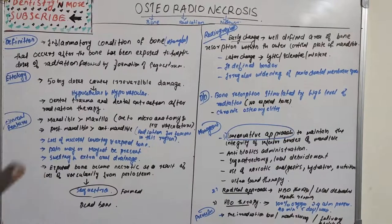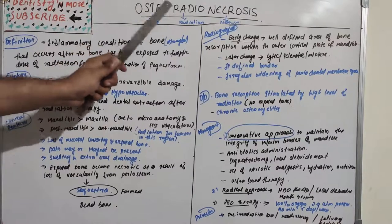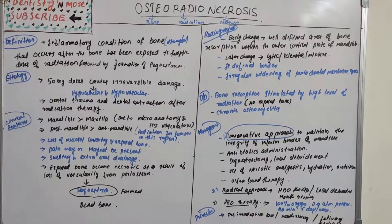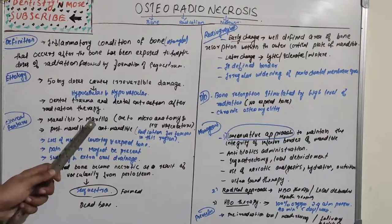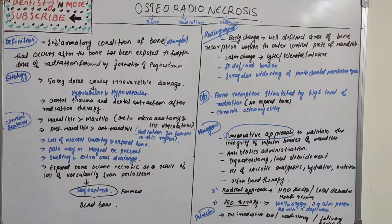On the preventive side, pre-radiation care, mouth rinsing, and salivary substitutes are also options. In summary, osteoradionecrosis is the formation of dead bone due to radiation therapy. However, radiation alone does not directly form the dead bone — it is because trauma or extraction on the irradiated bone causes sequestrum formation. Radiation results in hypovascularity and hypocellularity, and if trauma or extraction occurs in that area, dead bone formation follows.